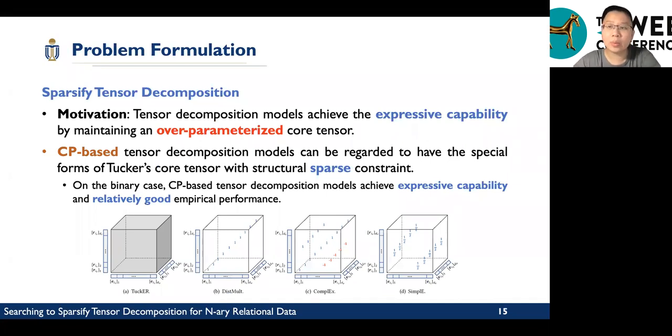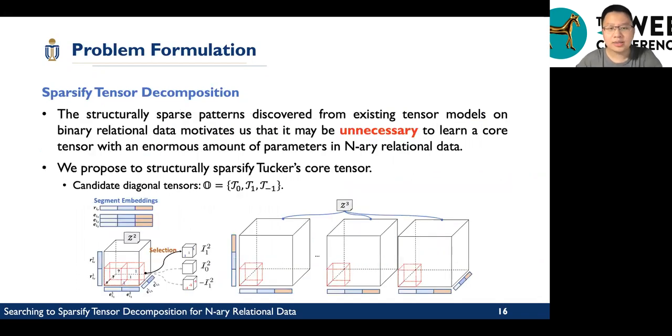Such embedding sharing mechanism can make embeddings learn from the low-order information in the high-order fact training, but also retains a part of high-order specific information. Second, we have an observation to solve the over-parameterization issues. The CP-based tensor decomposition models can be regarded to have special forms of Tucker core tensors with structural sparse constraints. On the binary case, CP-based tensor decomposition models achieve expressive capability and relatively good empirical performance. This motivates us that it may be unnecessary to learn a core tensor with an enormous amount of parameters in the n-ary relation data. Thus, we propose structurally sparse Tucker core tensors.